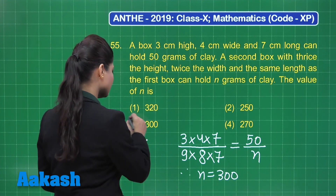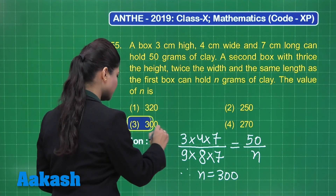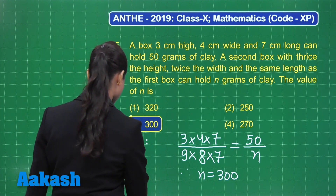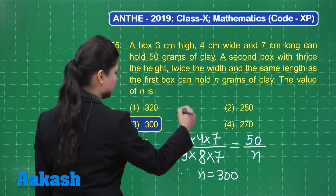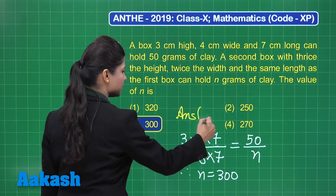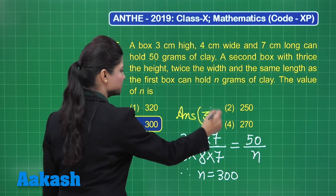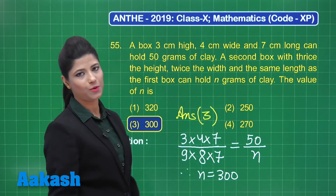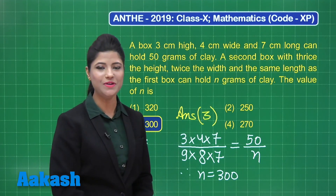The value of n is clearly 300, present in option number 3. You can definitely mark your answer as option 3. I hope that is clear.